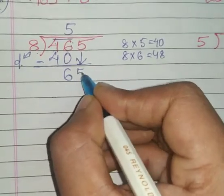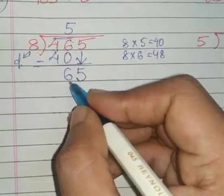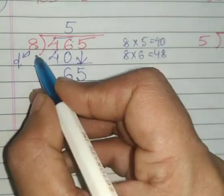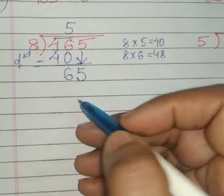Now bring 5 down. Now the new question is 65 divided by 8.